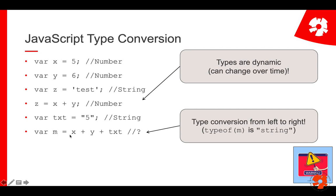The way JavaScript does this is it goes from left to right. So it starts by saying x plus y — two numbers — so it does a regular mathematical addition: 5 plus 6 is 11. The resulting type of 11 is number. But now I have 11 plus some text, a string. What JavaScript does is it converts my number 11 to a string and adds the 5 — and a plus for strings is concatenation — so the result is 115. This is highly unintuitive because 5 plus 6 is still a mathematical addition, but then 11 plus 5 becomes string concatenation.